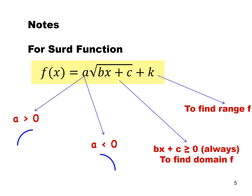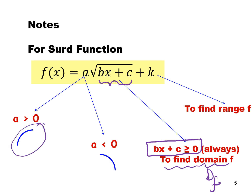For the general square root function, everything inside bx + c must always be greater than or equal to 0 — this part is used to find the domain. When a is positive, the shape of the square root function goes upward, and when a is negative, the function goes downward. The constant k shifts the graph vertically and is used to find the range.